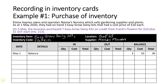Transaction one: on May 5, the business purchased seven Easy Grow Daisy Kits on credit from Frank's Flowers, costing $10 each plus $1 GST. On May 5, in the details section, we put the source document — Invoice 213. Because we've purchased these items, they're coming into our business, so we record seven in the In column at $10 each (we only record the cost value, excluding GST), totalling $70. We then update the balance: we had three at May 1st, plus seven more gives us 10 items at $10 each, equalling $100.